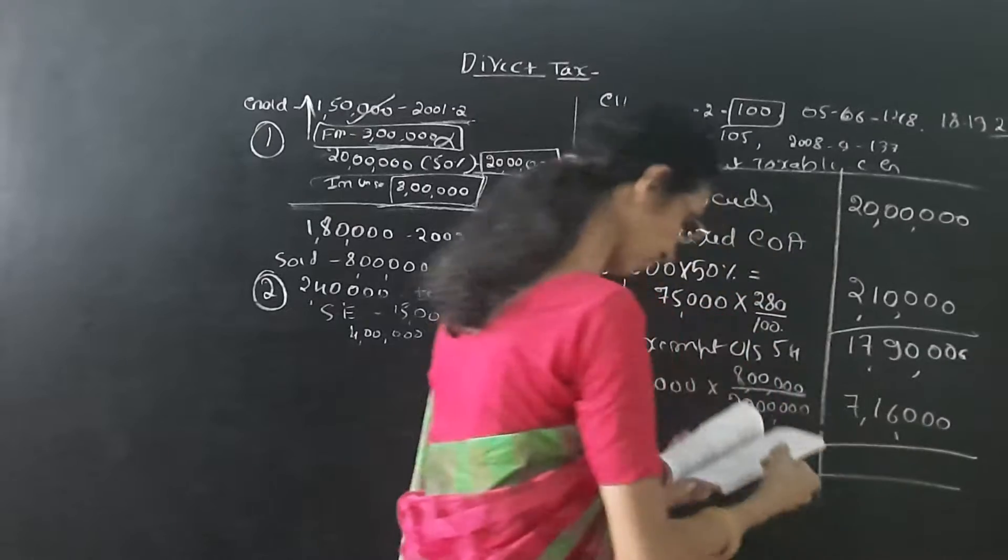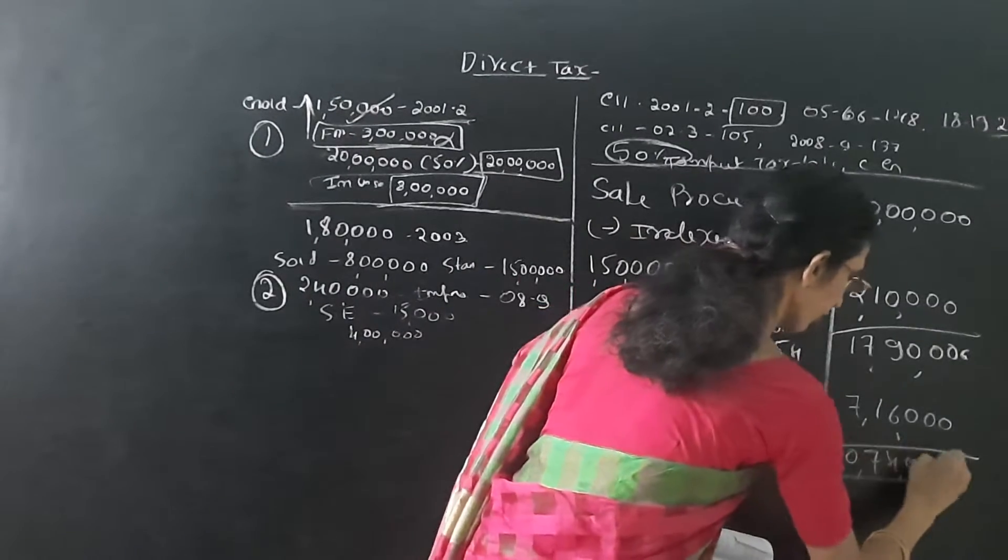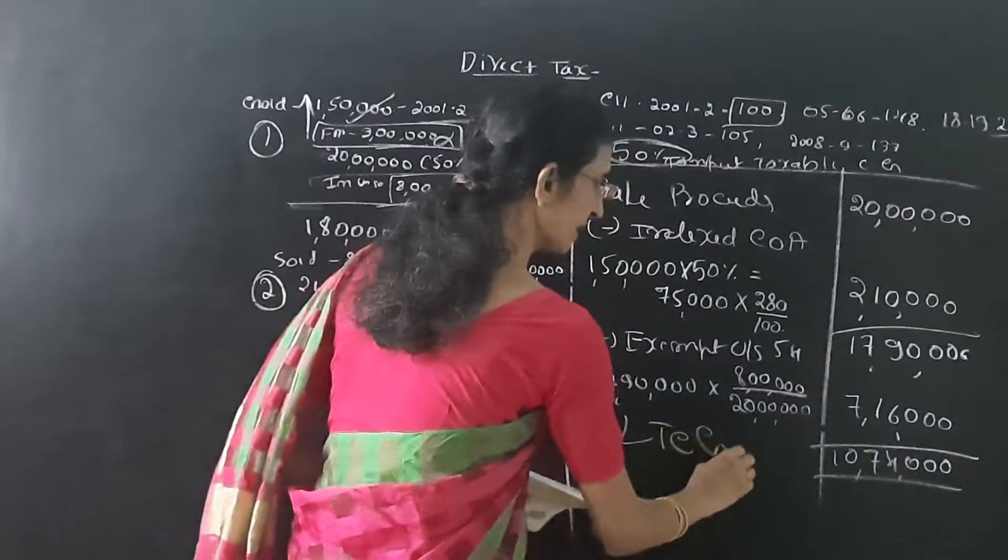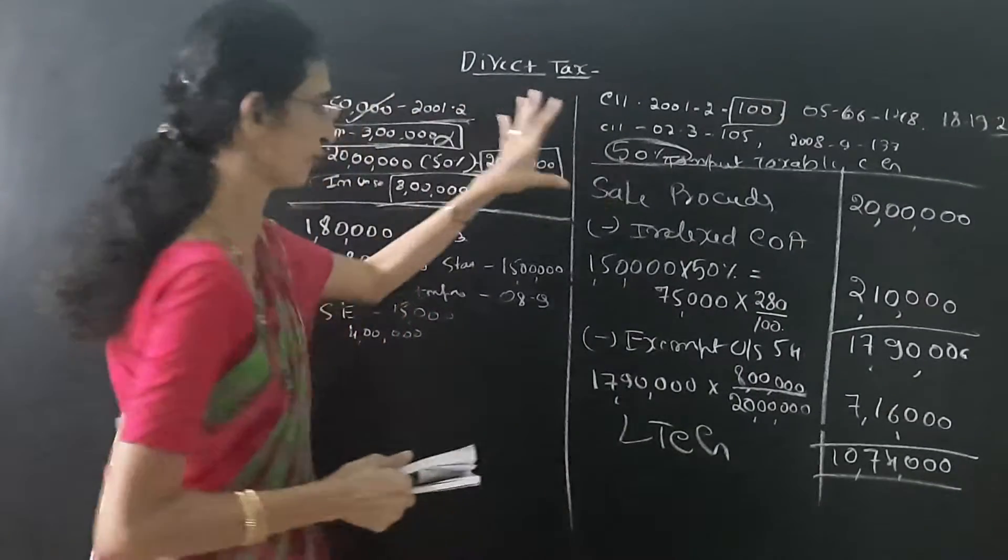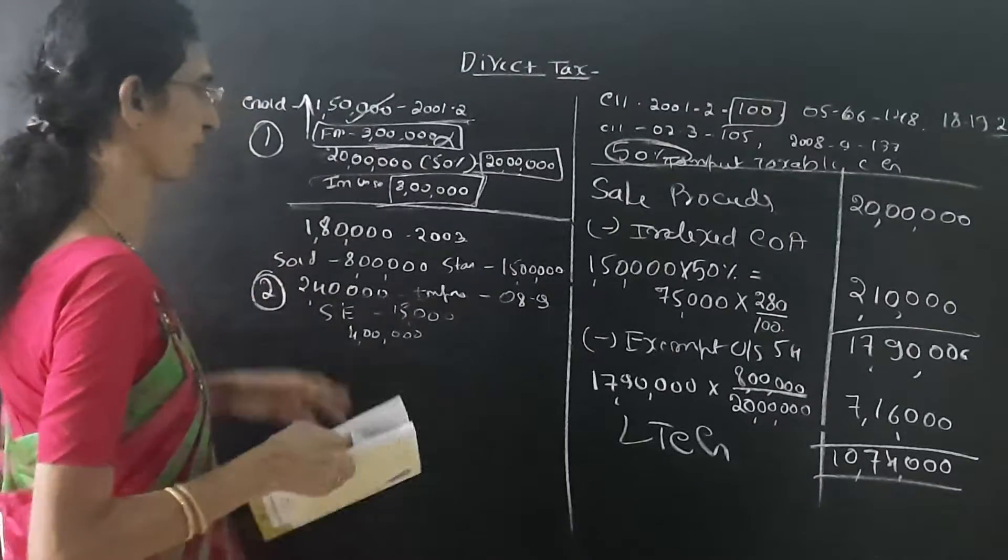So here it is 7,16,000. The taxable capital gain will be 10,74,000. Now the taxable long-term capital gain is 10,74,000. This is the first problem. Next, we can see another problem, second problem.